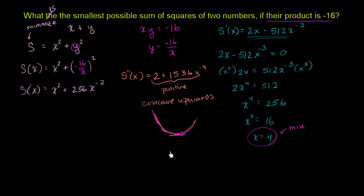So what is y going to be equal to? We actually don't even have to figure out what y has to be equal to in order to minimize the sum of squares. But just for fun, we see that y would be negative 16 over x. So y would be equal to negative 4. And we could just figure out now what our sum of squares is. Our minimum sum of squares is going to be equal to 4 squared, which is 16, plus negative 4 squared, plus another 16, which is equal to 32.